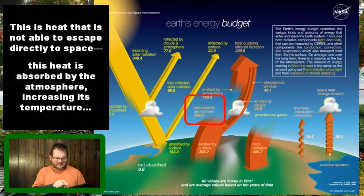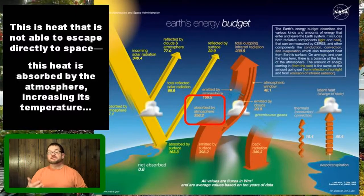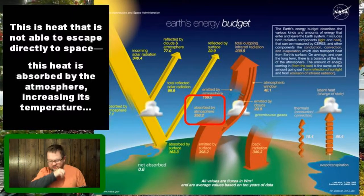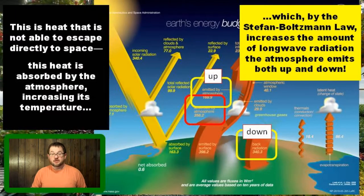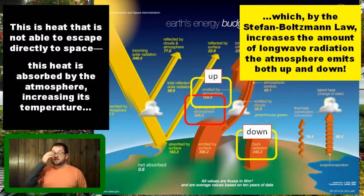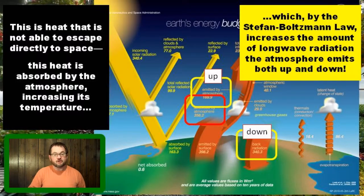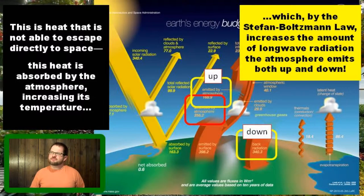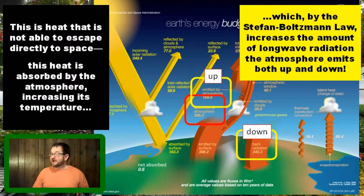We actually saw on the NASA energy budget diagram that there's radiation absorbed by the Earth's atmosphere — heat that could not escape directly to space because the surface emitted it but the atmosphere absorbed it. Absorbing radiation warms the Earth's atmosphere, and then by Stefan-Boltzmann's law, the gases that did that absorbing also emit radiation. They emit that radiation in all directions — up and down — and the radiation emitted downward by the atmosphere comes back to the surface of the Earth and warms the ground back up.